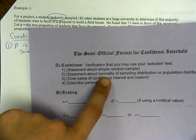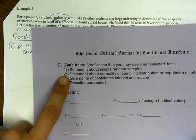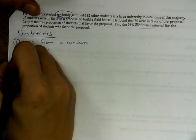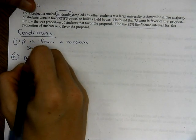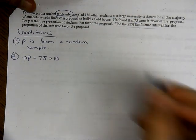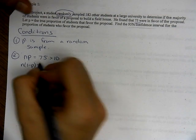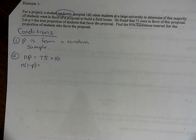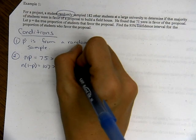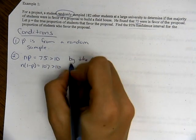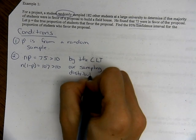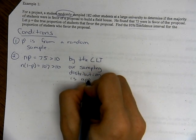Condition two is a statement about normality of the sampling distribution — that's the central limit theorem. We check: n times p-hat equals 75, which is greater than or equal to 10. And n times 1 minus p-hat: 182 minus 75 equals 107, also greater than or equal to 10. So by the central limit theorem, our sampling distribution is approximately normal.